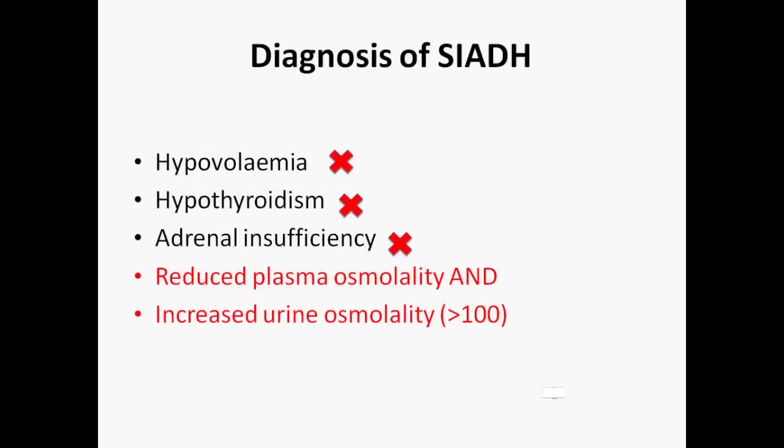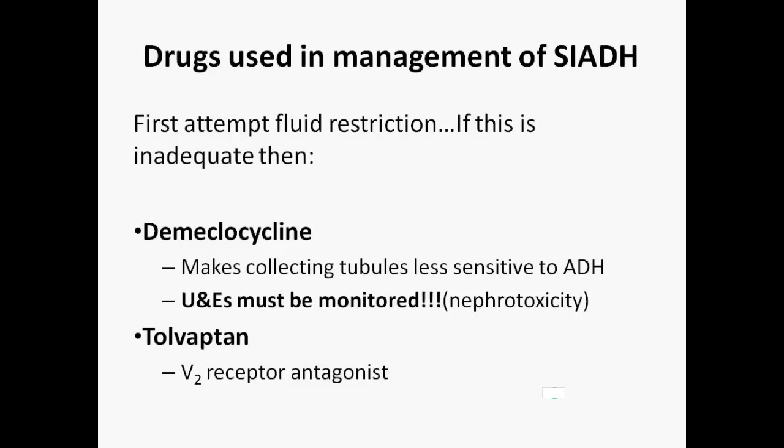SIADH can be diagnosed if the normal stimuli for ADH release are not present, based on plasma and urine osmolality results. Diagnostic criteria include: sodium of less than 135, plasma osmolality of less than 270, urine osmolality of greater than 100, and urine sodium of more than 20 millimoles. Drugs to consider if fluid restriction doesn't work include demeclocycline, which dampens the responsiveness of renal tubular cells to ADH, and a newer agent called Tolvaptan, which acts as a V2 antagonist. This is often used in cases of chronic hyponatremia.